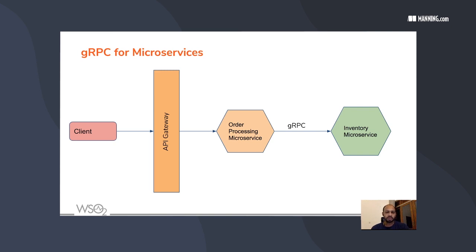In chapter 8 we talk about how you can secure microservices that are communicating with each other using gRPC. In chapter 9 we talk about reactive microservices, their use cases, and why we need them. We also cover how you can use Kafka for reactive microservices and how to secure communications happening in Kafka. The session will include a brief presentation followed mostly by demos using samples from the book.